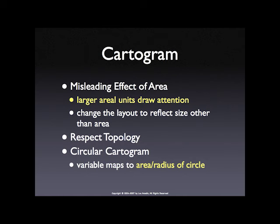The idea is that a standard choropleth map shows the spatial unit of observation as a polygon, and the area of that polygon is the size of the unit that you see. The connotation of this is that bigger is better — bigger is more important — which may not be the case for the variable you're looking at. An example I always use is homicide rates by county in the U.S. If you make a map of all the counties in the U.S., and you look at the homicide rate, which are the places with the highest homicides?